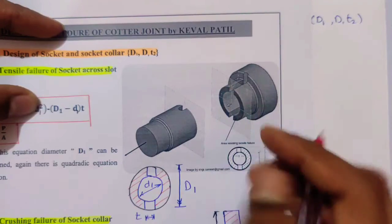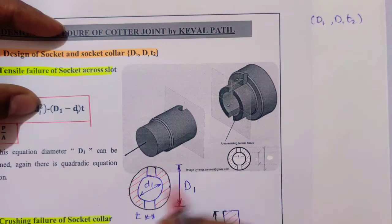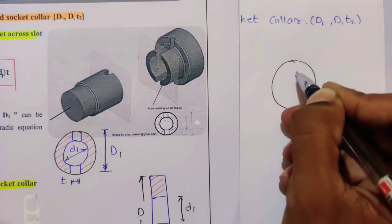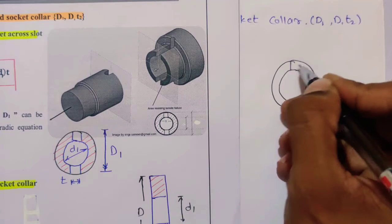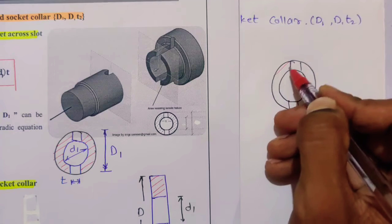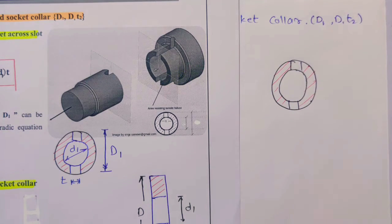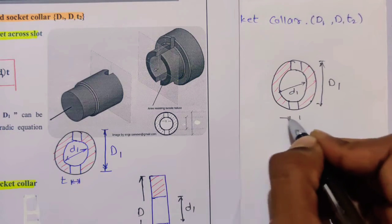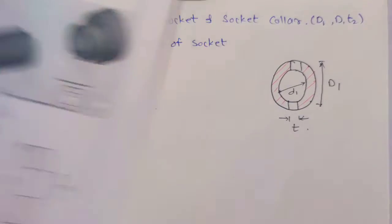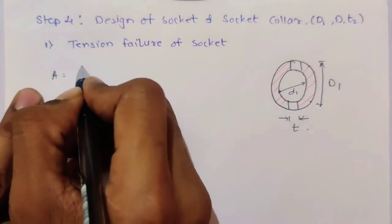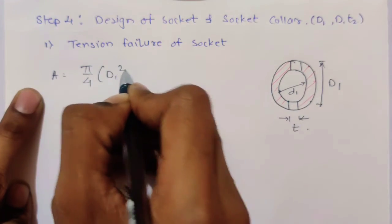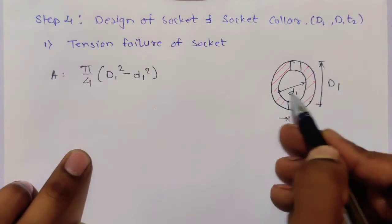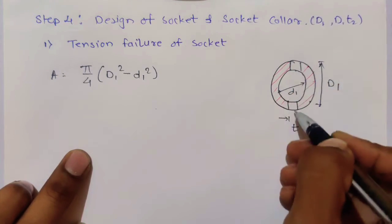It is breaking like this, and we know the dimension — so this is the failure area. Just draw the failure area: the socket breaks across the slot. The inside dimension is D1 (capital D1) and this outer dimension is D. So what is the area? This area is a big circle: pi/4 × (D1² − d1²), giving us this ring area.